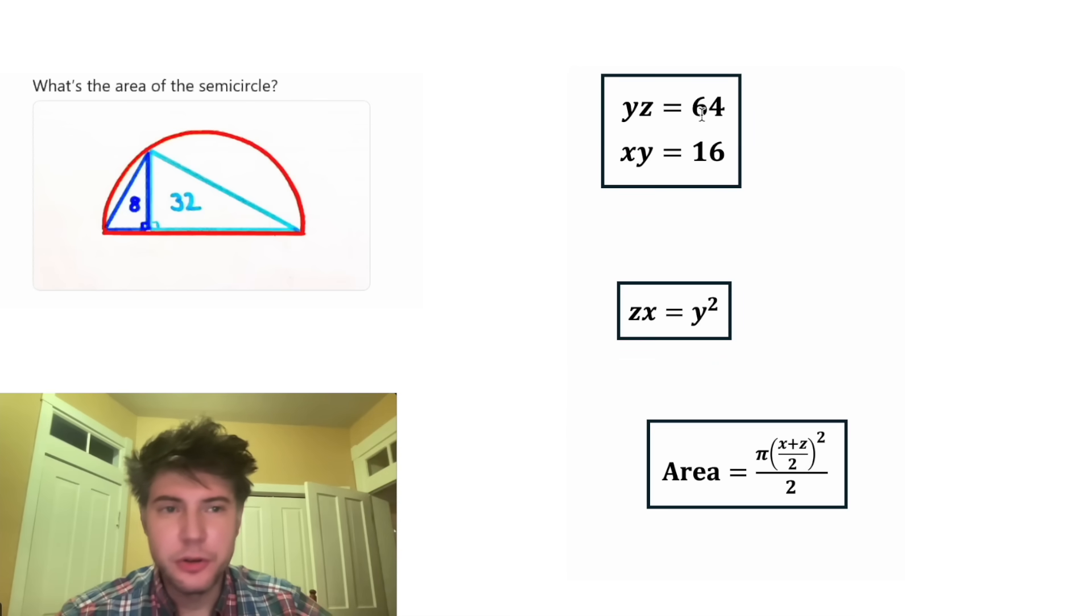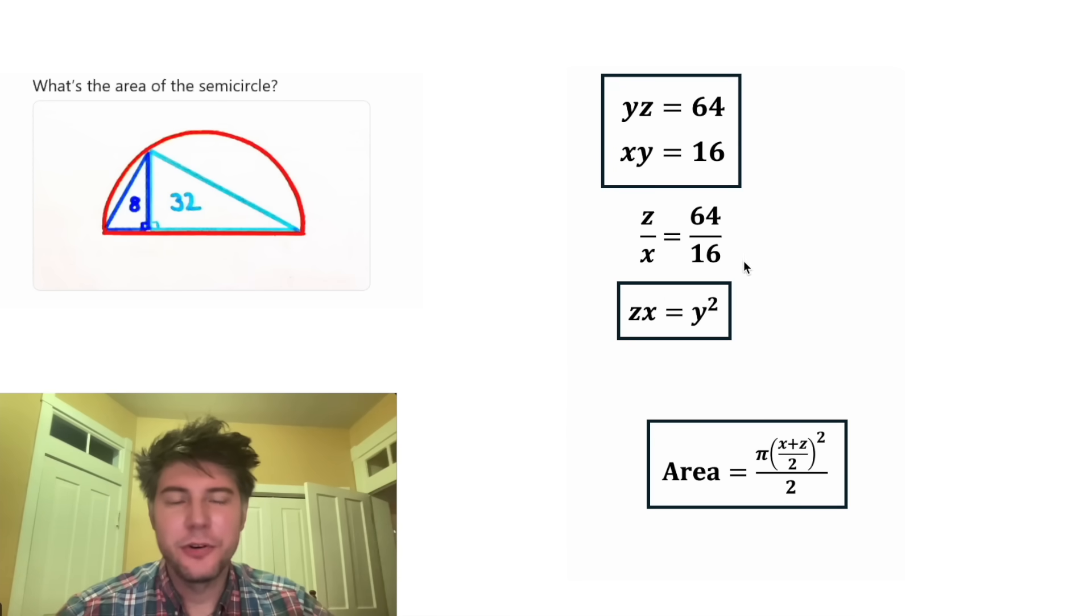For these first two equations, we can get rid of the Ys by doing this row divided by this row. So we end up with YZ over XY equals 64 over 16. And now this Y and this Y will cancel each other out. And we're left with Z over X. And then 64 divided by 16 is 4. Now to get rid of this fraction, let's multiply both sides by X. This X and this X will cancel each other out.